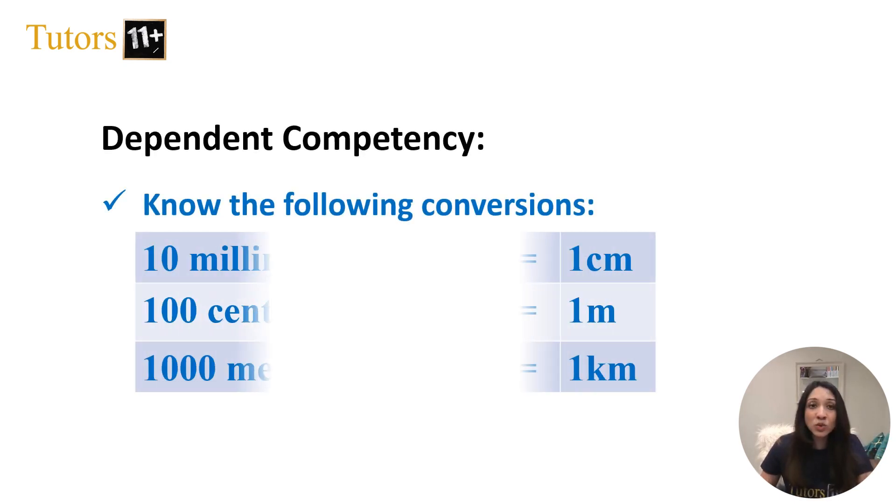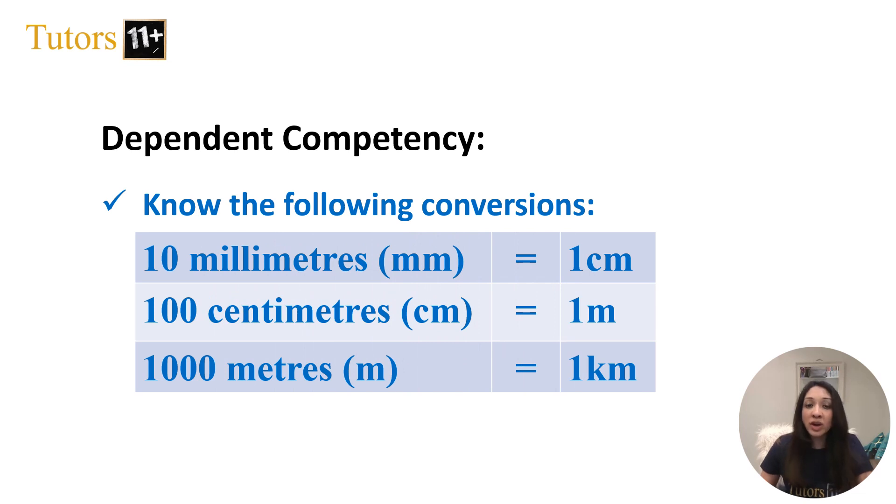Before we get into it though, it's really important that you know your conversions. Specifically, that 10mm is equal to 1cm, 100cm is equal to 1m, and that 1000m is equal to 1km.